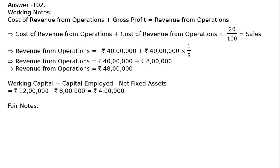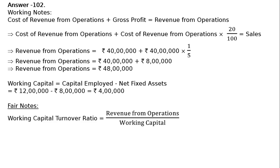Working capital turnover ratio is equal to revenue from operations upon working capital. We have got both values from the working notes. Revenue from operations is Rs. 48,00,000 upon working capital Rs. 4,00,000, which equals 12 times.